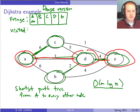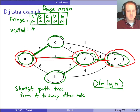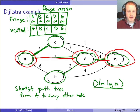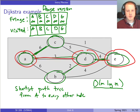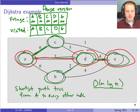Originally, the fringe values will all be infinity — meaning we don't know any way to get to those nodes yet. The visited list still functions similarly, but we store it as an array of booleans: have you visited that spot yet or not? Originally these will all be false. The algorithm proceeds the same way, just using the data structures differently.